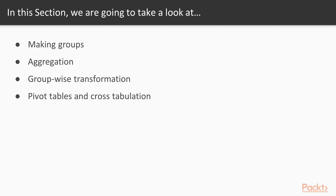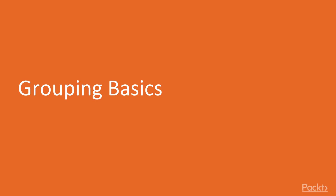We start this section with the basics — what groups are and how we form them from Pandas data frames. Once we learn how to form groups, we talk about aggregation to get group summaries. We return to the topic of transformation and other operations in the context of groups, and we wrap up the section by discovering cross tabulation and pivot tables.